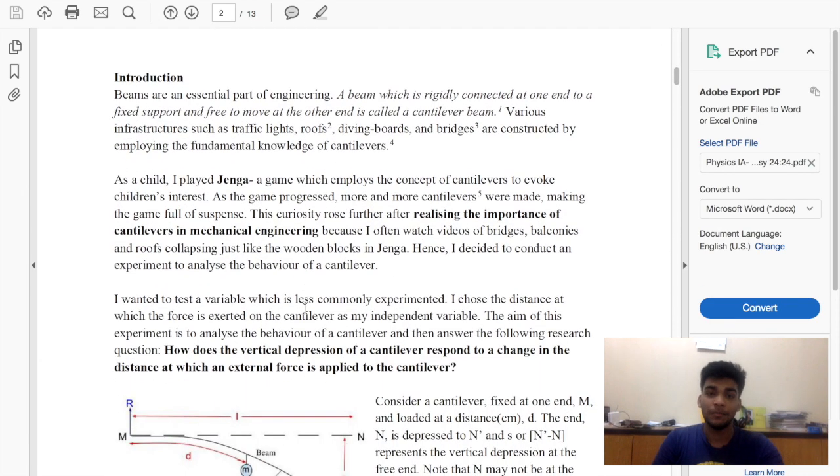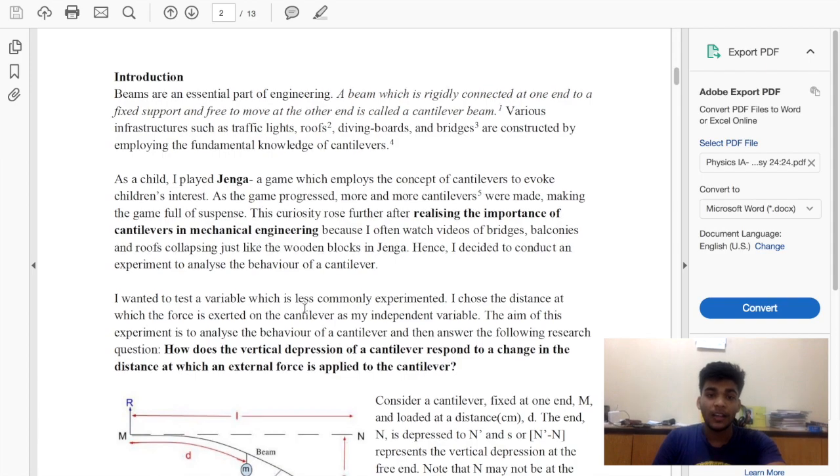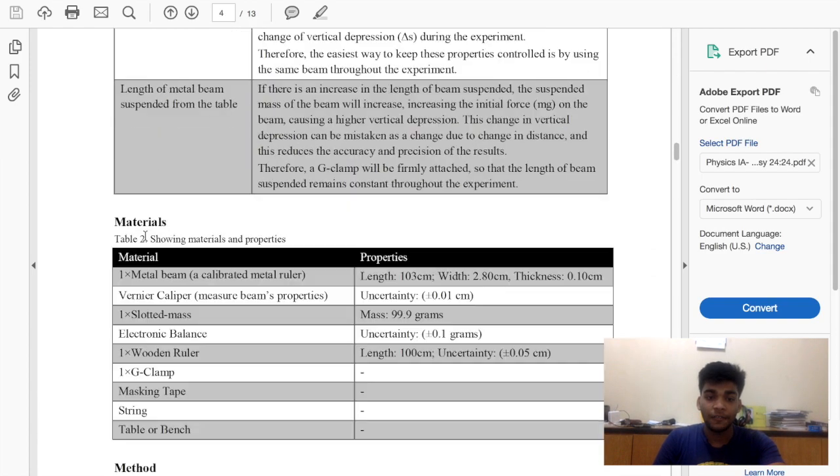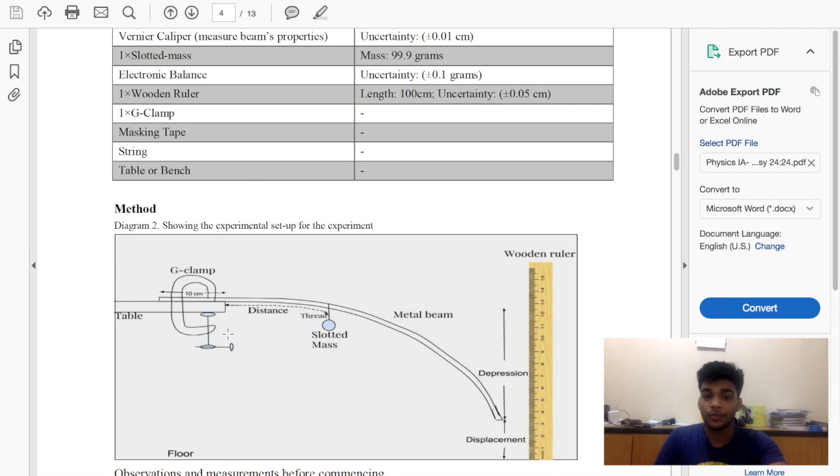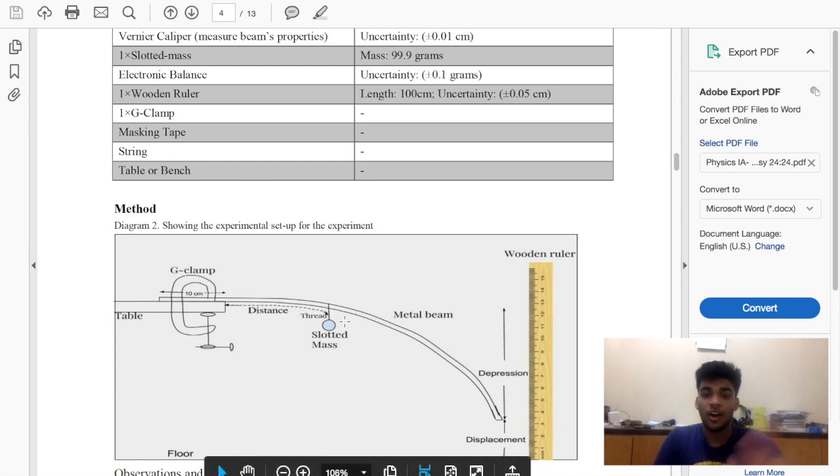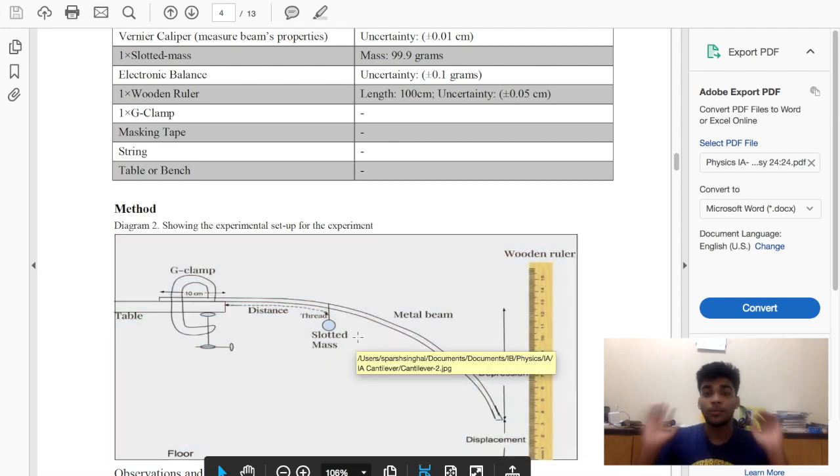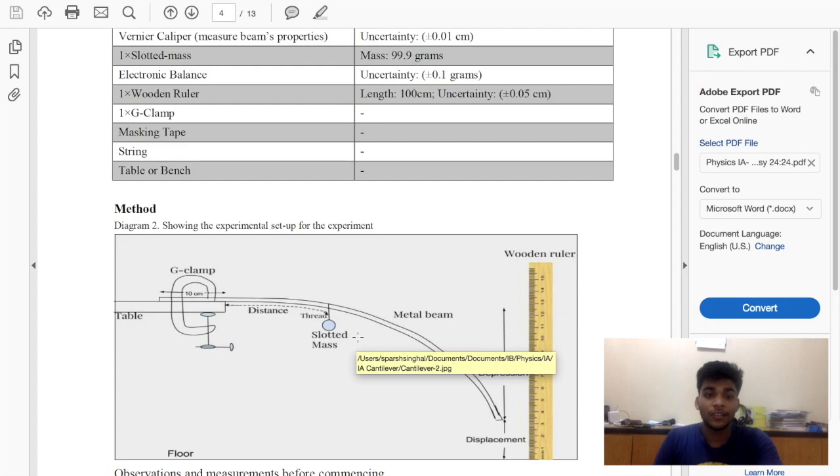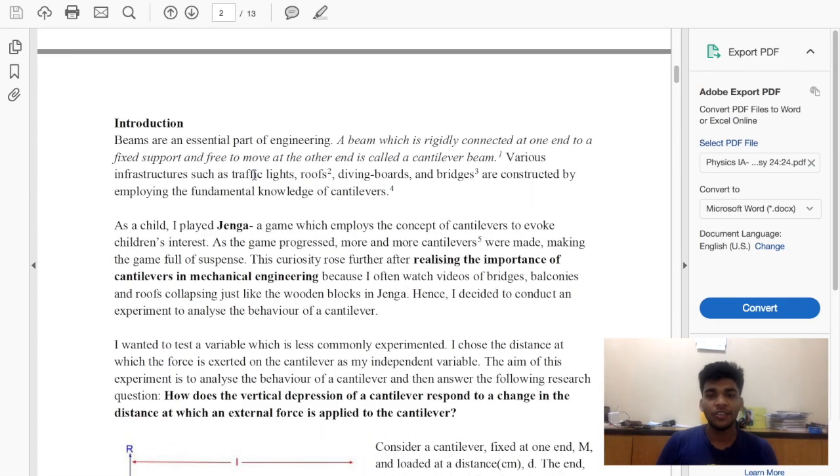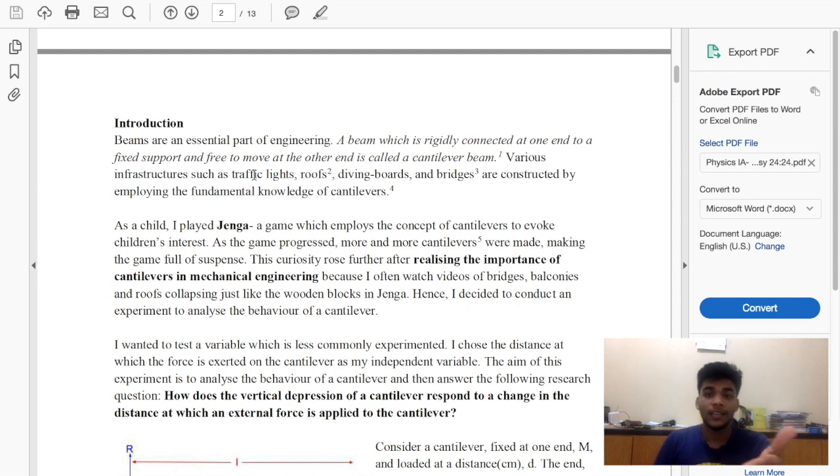Introduction. I just talked about beams. It's basically something hanging from the table. I used a ruler, a metal ruler, and I put mass at different lengths and just saw how much it was bending. The scientific word is how much depression there was, and this is what a cantilever is. So, introduction: beams are an essential part of engineering, and a beam that's rigidly connected at one end to a fixed support and free to move at the other end is called a cantilever beam.